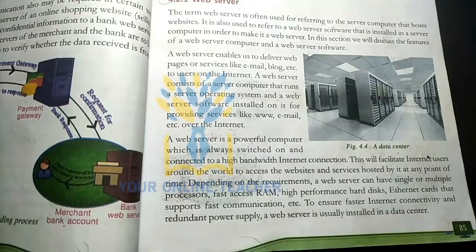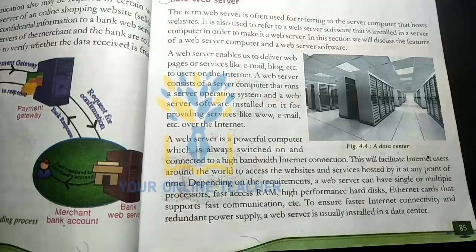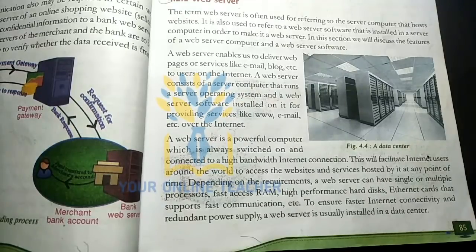For example, if people would like to access a web server, we can use a web server. You can use a processor and fast access to RAM and a high performance hard disk. You can use fast communication support for Ethernet cards. For faster internet connectivity, you can use a redundant power supply.